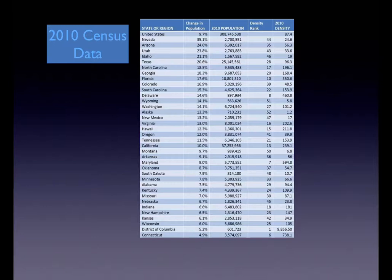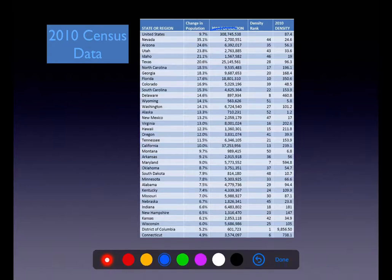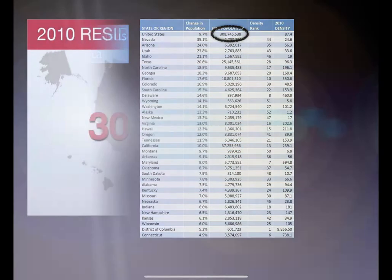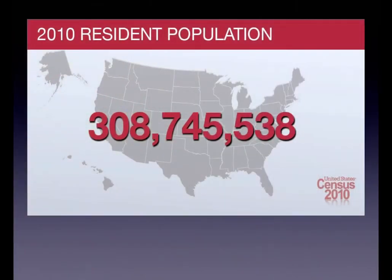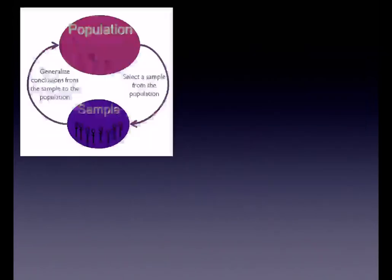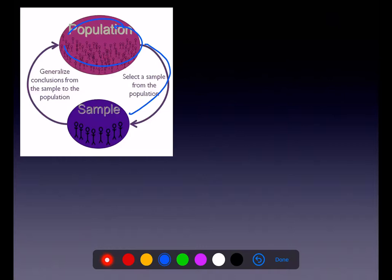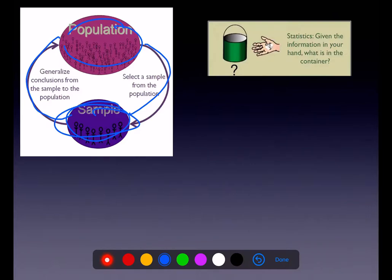Sampling variability will come back into play in Chapter 7. Let's talk about the census. Here was the 2010 census — as of 2010, we had 308 million folks in our country. California had nearly 37 million. The actual number from the Census Bureau was 308,745,538. It's always this process: from your population, pick a sample, crunch a number, and generalize it back up to your population.